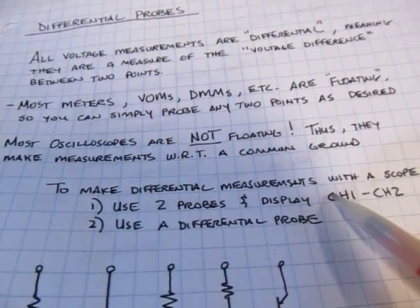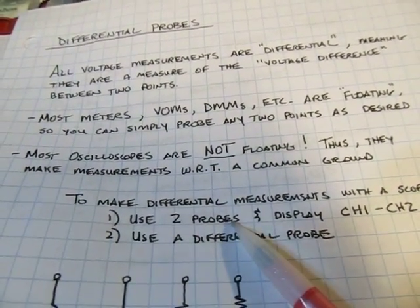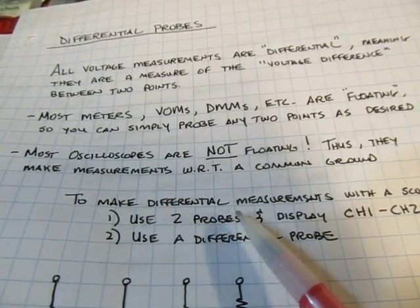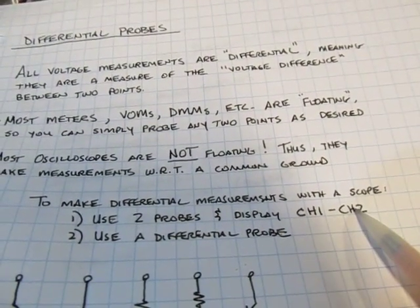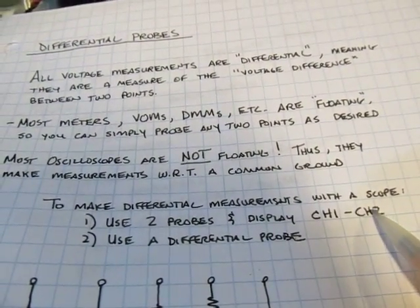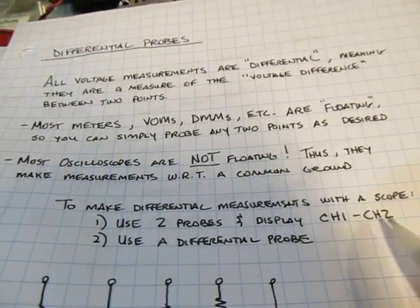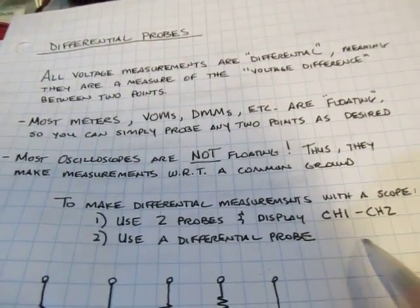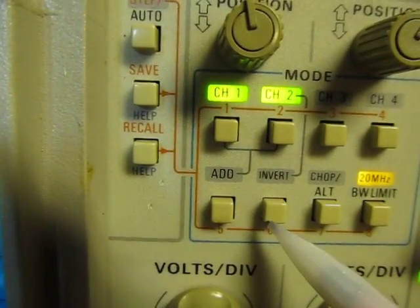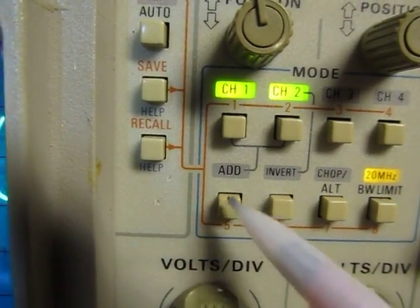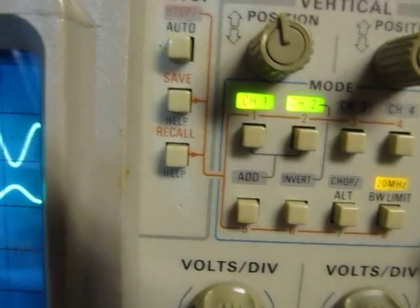So in order to make a differential measurement, we can do two things. We can use two probes that are matched in delay, matched in attenuation or response, and then display channel one minus channel two. And any modern digital scope can actually do that as kind of like a math operation. The older analog scopes typically had a way of inverting one of the channels and then adding them together. So that's channel one plus the inverse of channel two is like doing channel one minus channel two.